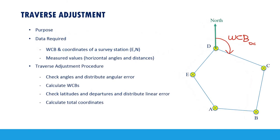A traverse consists of a series of connected points or stations. As you can see, we have stations E, D, C, B, and A, which form a five-sided traverse. A traverse can have any number of sides — in this case five, but it could be four, six, seven, eight, or nine.